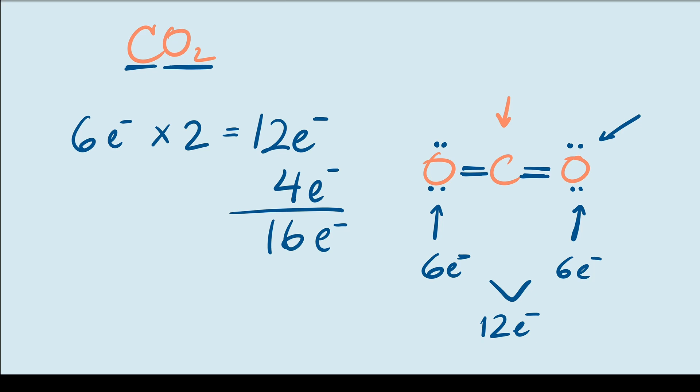But now what we've done is given the central carbon atom 2 double bonds, giving it a total of 8 electrons. So the octets for all 3 elements are fulfilled. And this is the final structure of carbon dioxide.